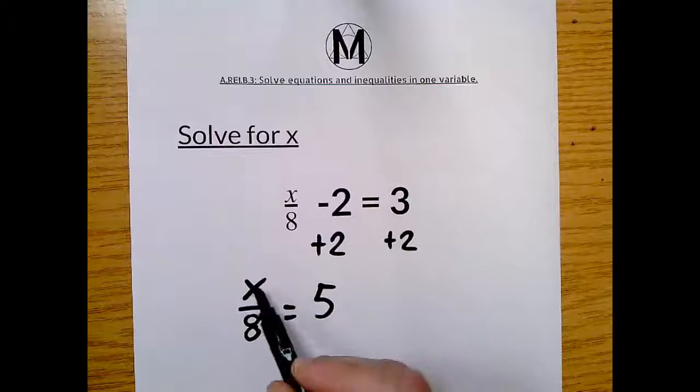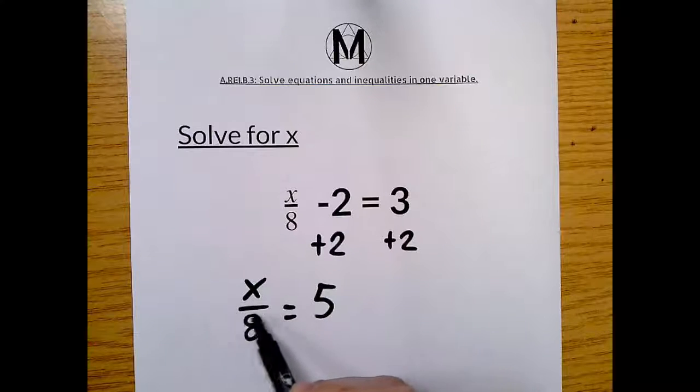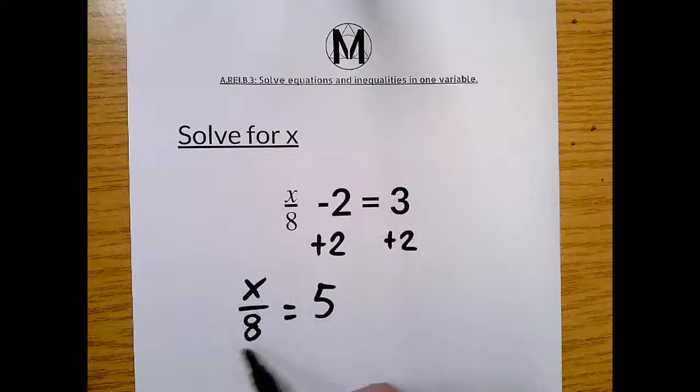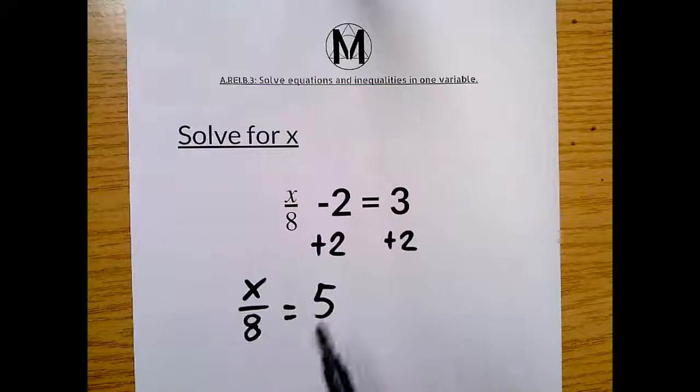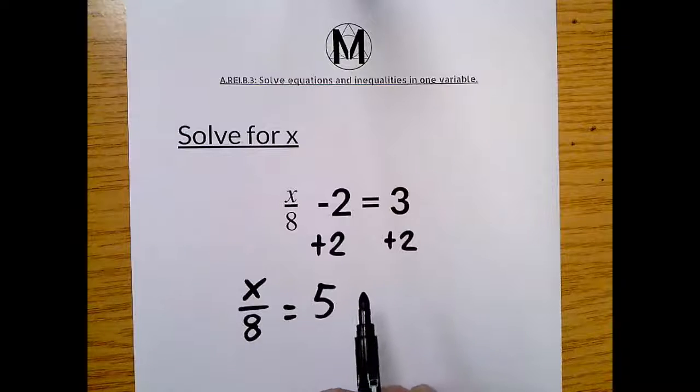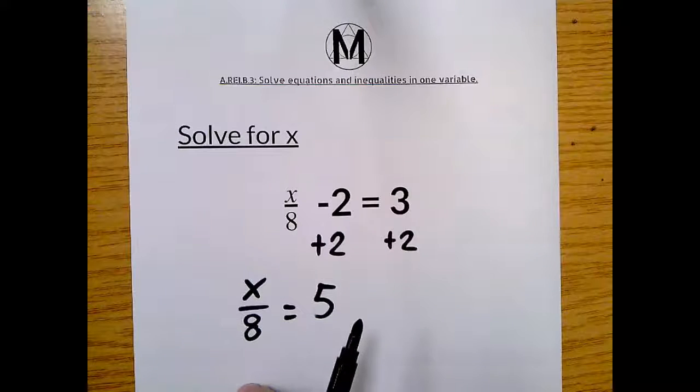Now, this x, I want it to get all by itself, but I can't right now because it's being divided by 8. So the opposite of dividing by 8 is just multiplying by 8. So all you do is multiply both sides by 8.